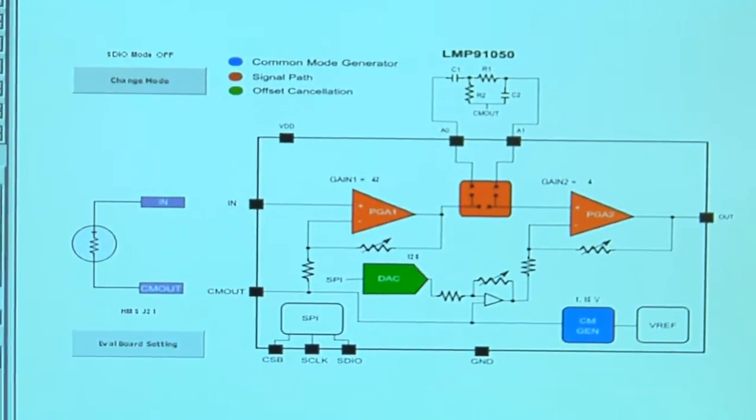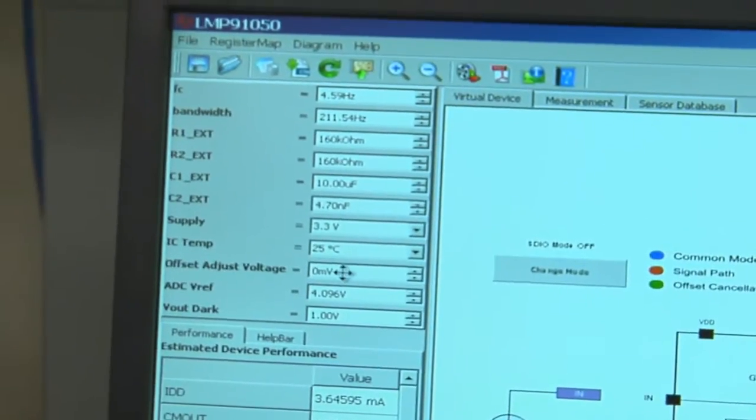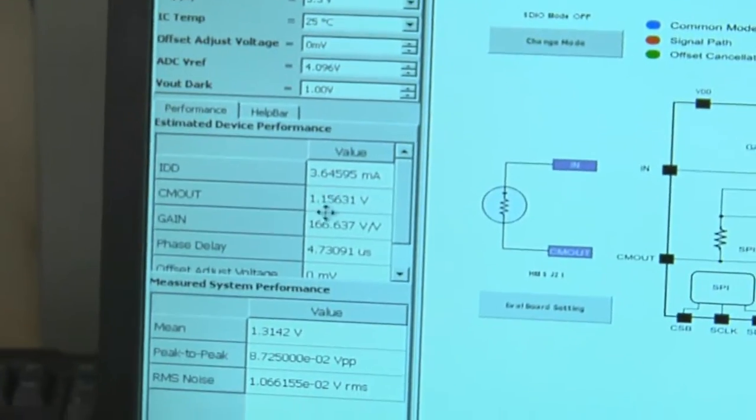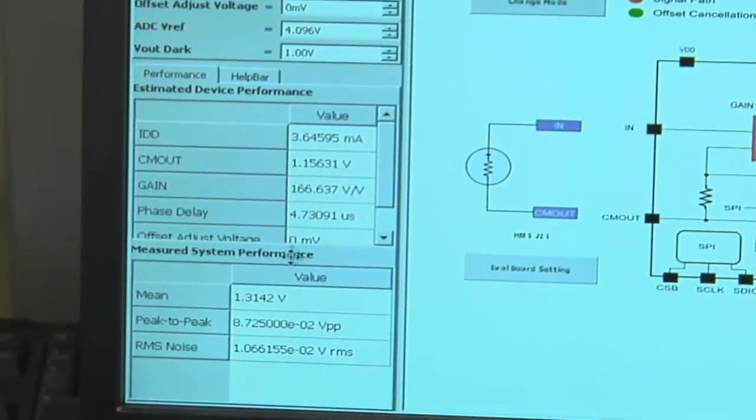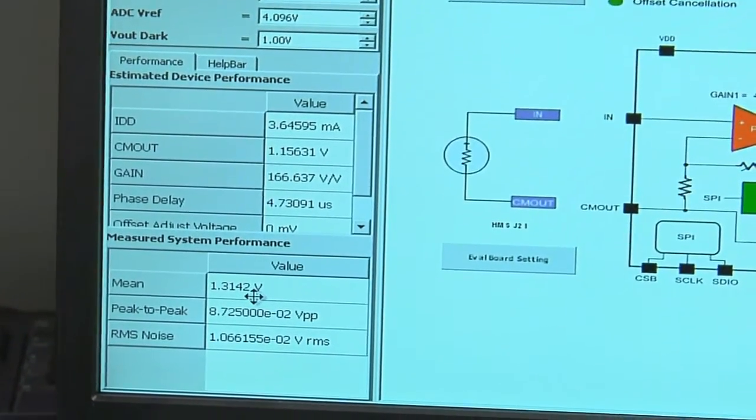On the top left, customer inputs. On the left of the screen, estimated device performance. On the bottom left, is measured system performance.